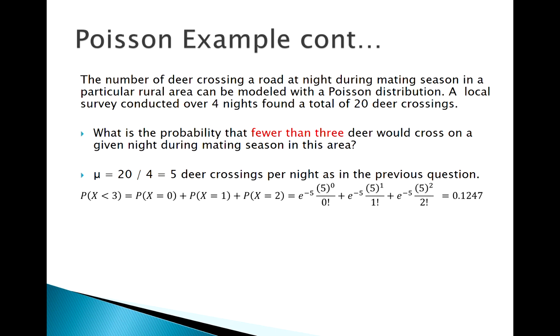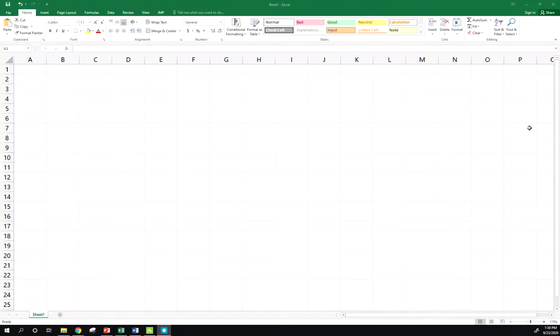Less than three means zero, one, two. In a situation like this we'd find ourselves plugging into the PMF multiple times. Now in the last example it didn't ask for a cumulative probability, but this is a cumulative probability. Usually for cumulative probabilities this is where we really want to rely on technology.